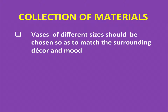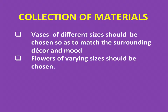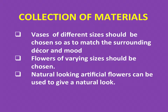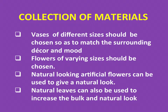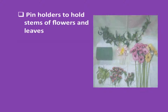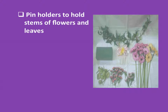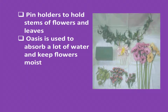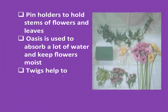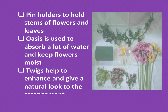First, vases of different sizes should be chosen so as to match the surrounding decor and mood of the surrounding area. Flowers of varying sizes should be chosen to break the monotony and increase interest. Natural-looking artificial flowers can be used to give a natural look. Natural leaves can also be used to increase the bulk and natural look. Pin holders and stems of flowers and leaves should be prepared. Oasis is used to absorb water and keep flowers moist. Twigs help to enhance and give a natural look to the arrangement.